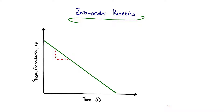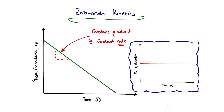The straight line by definition has a constant gradient, and the gradient of the line with plasma concentration as a function of time is the same as the rate. If we plot a second graph looking at the gradient as time progresses, we would see that the rate of elimination is completely constant. Mathematically, you're taking the plasma concentration function and differentiating it to give you the rate.